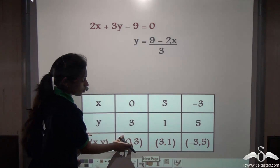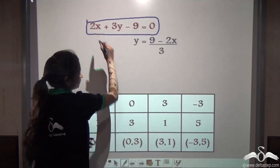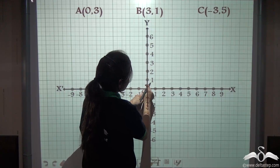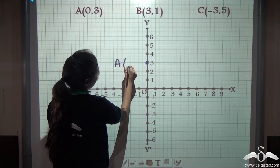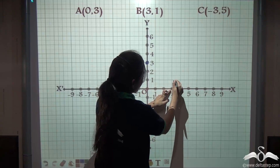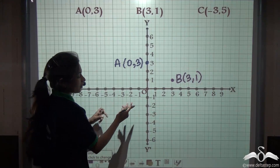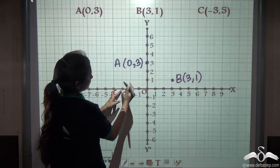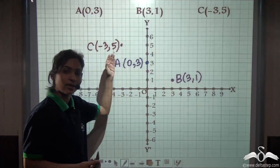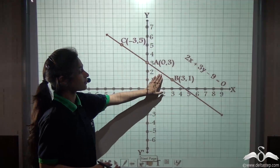So we get our three coordinates: (0, 3), (3, 1), and (minus 3, 5). Plotting these coordinates on the graph paper will help us graph this equation. Let us name them as points A, B, and C. Point A is (0, 3) — 0 on the x-axis and 3 on the y-axis. Point B is (3, 1) — 3 on the x-axis, 1 on the y-axis. Point C is (minus 3, 5) — minus 3 on the x-axis and 5 on the y-axis. Joining these three points gives us the line for the equation 2x plus 3y minus 9 equals 0, shown as the red line.